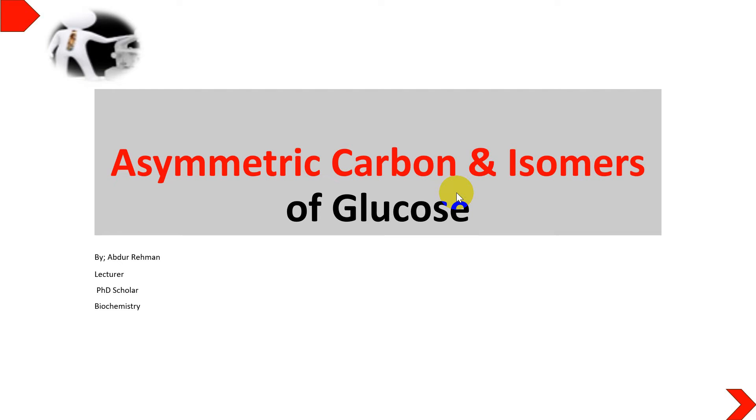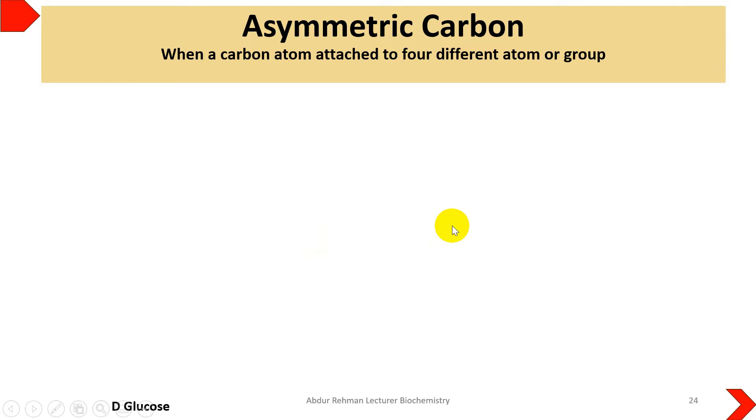Back to Students Diary, this is Abdul Rahman. Today we will discuss asymmetric carbon or chiral carbon with respect to carbohydrates. We know that carbon has four sharing electrons, so it can make four bonds to same or different atoms.